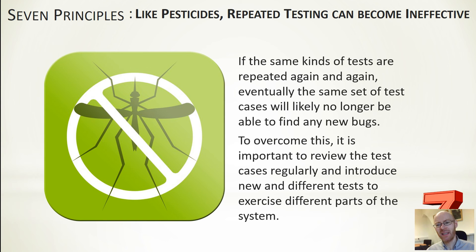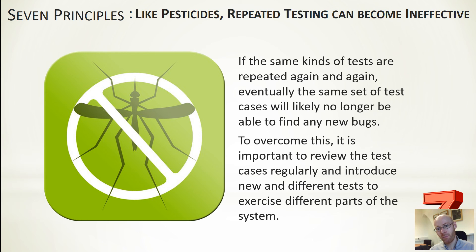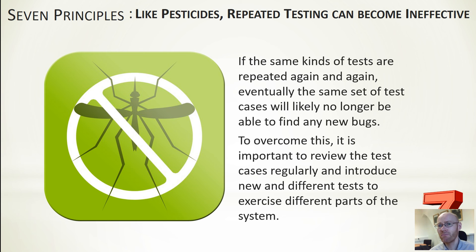Like pesticides, repeated testing can become ineffective. If you keep using the same set of tests and developing code against those tests, you'll probably come to a point where it works perfectly for that set — but because you're always using the same set, you're not exploring other possibilities and risk missing bugs being introduced. It's good not to become too reliant on one set of tests — every so often, put a fresh pair of eyes on it and introduce more tests, similar tests, or slightly different tests to increase the chance of discovering defects.